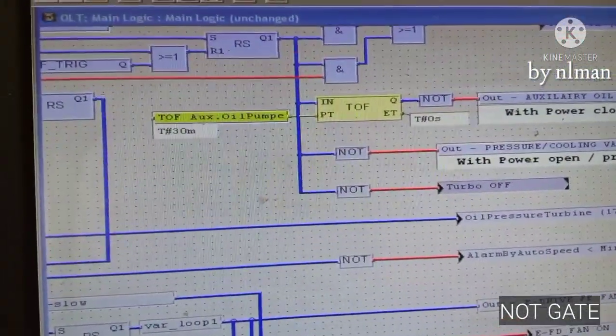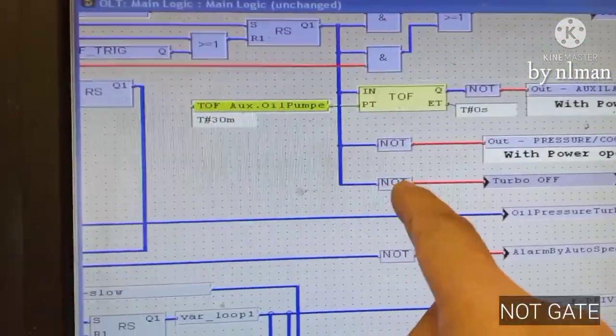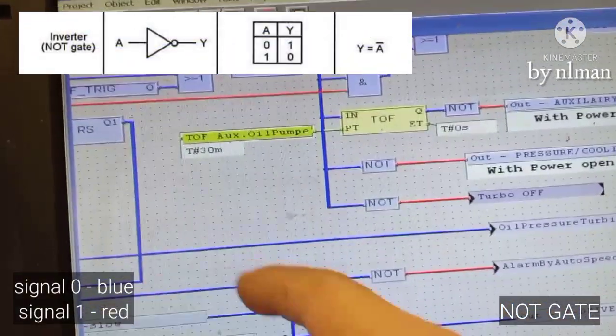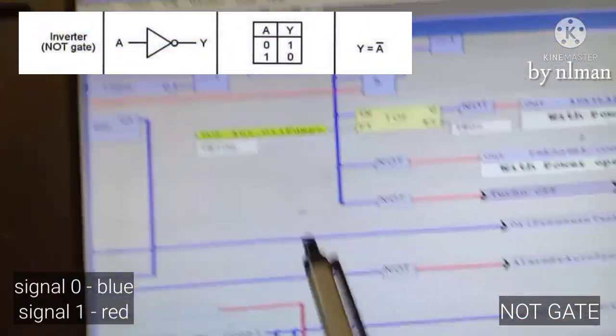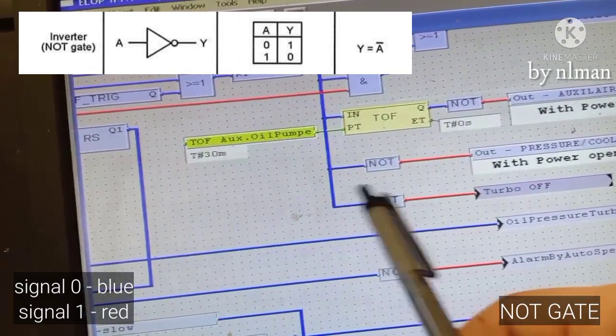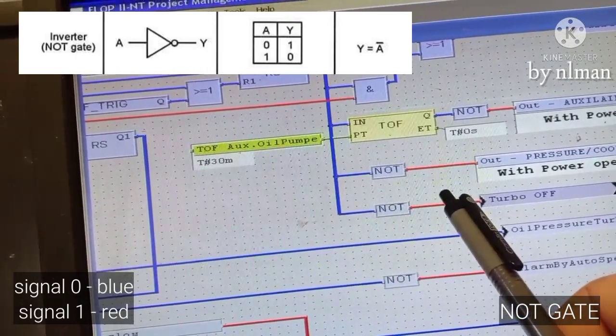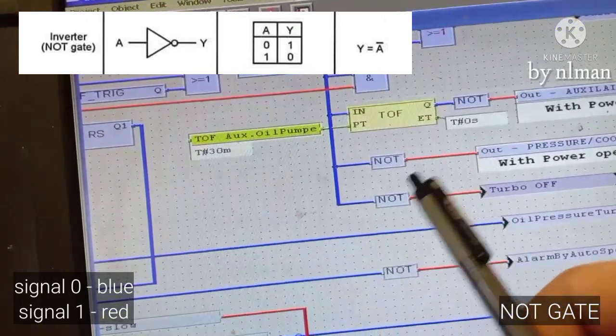Now we will discuss the inverter. If you have zero here, you have one here. But if you have one here, this one should be zero. It's an inverter.